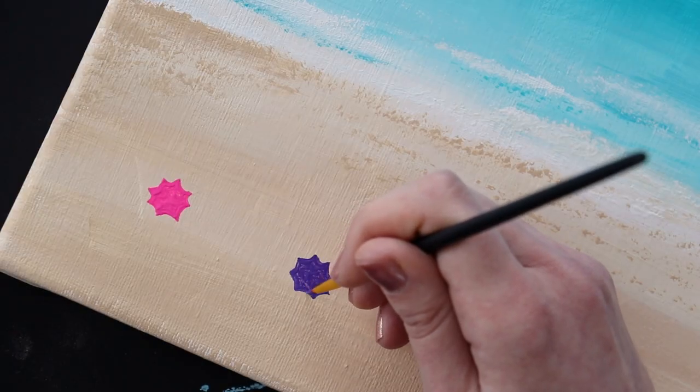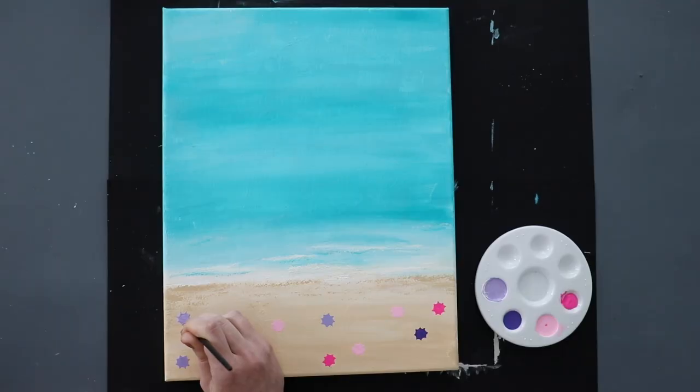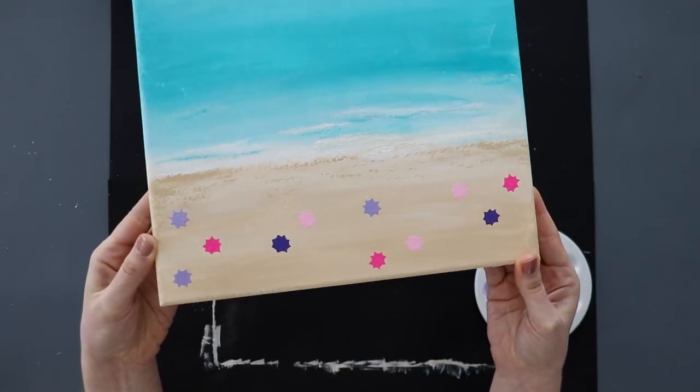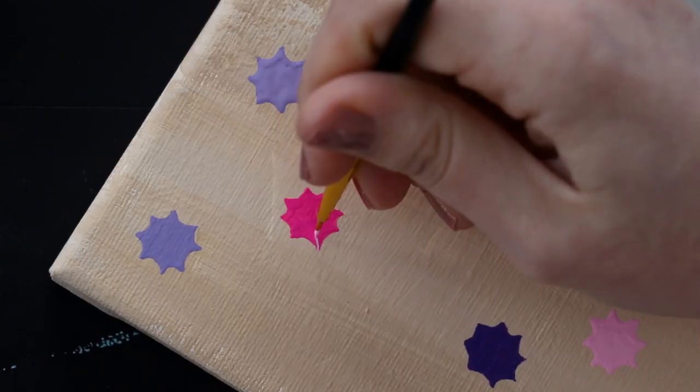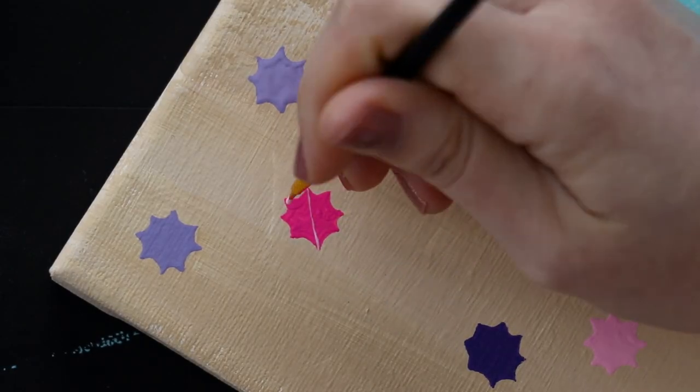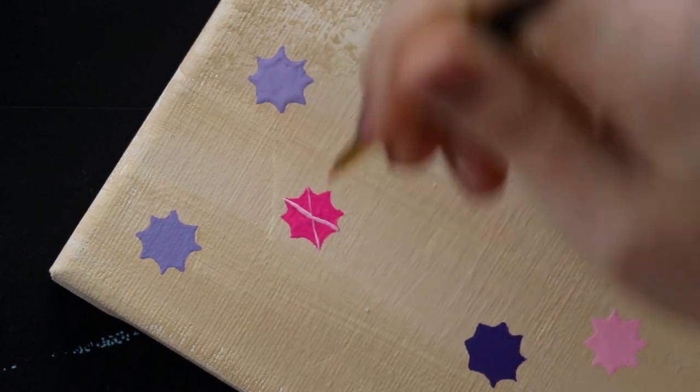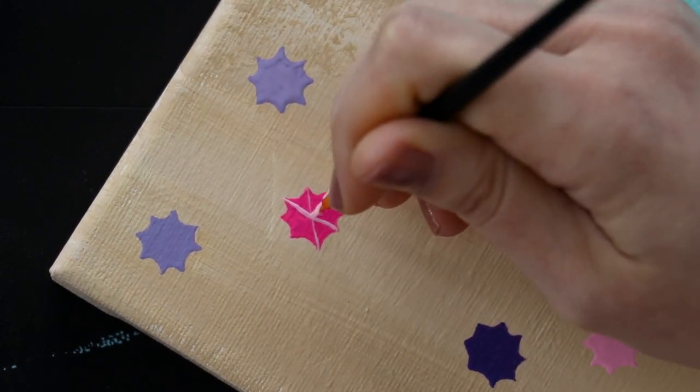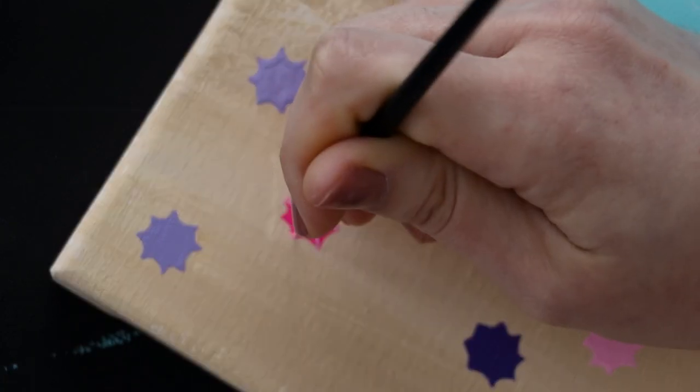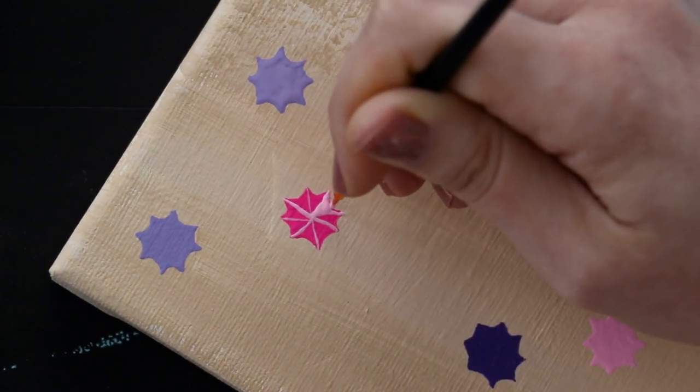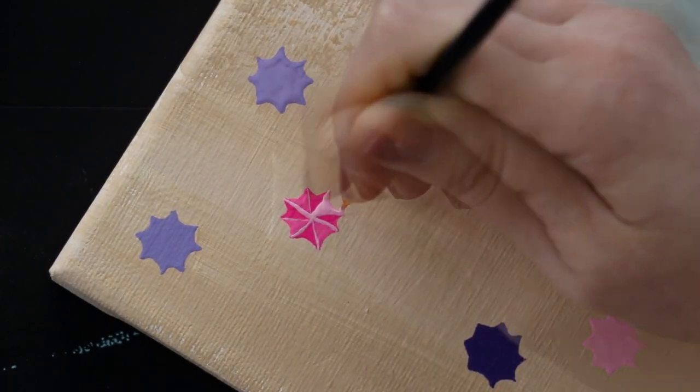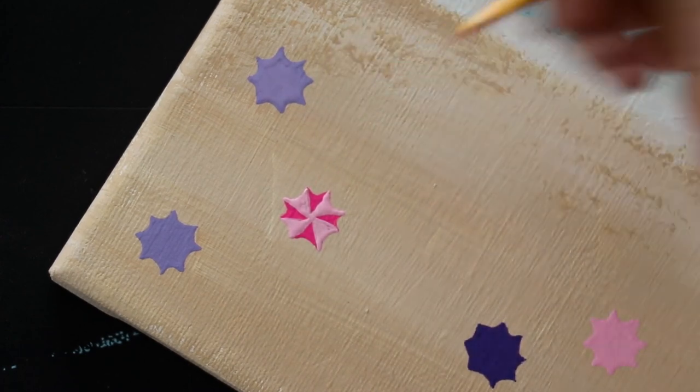So you're just going to repeat all of those steps to make as many umbrellas as you want to add. So once you're finished painting all of your umbrellas, go back to the first one you painted, because that one will probably be dry by now. You'll want to use a second color to draw lines between each of the different points. And then you'll fill in every other section to really make it look like an umbrella.